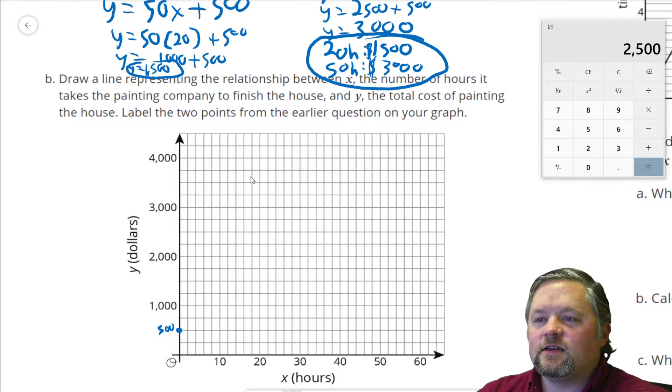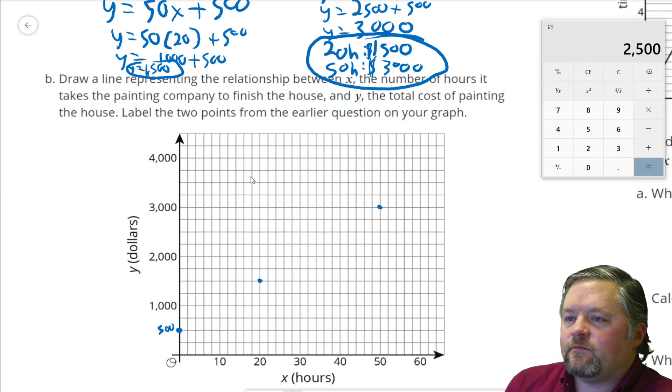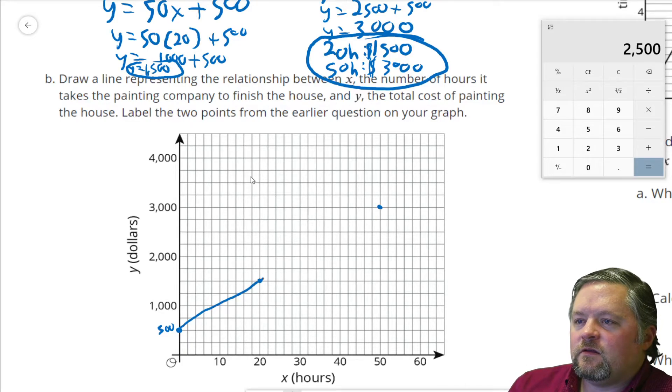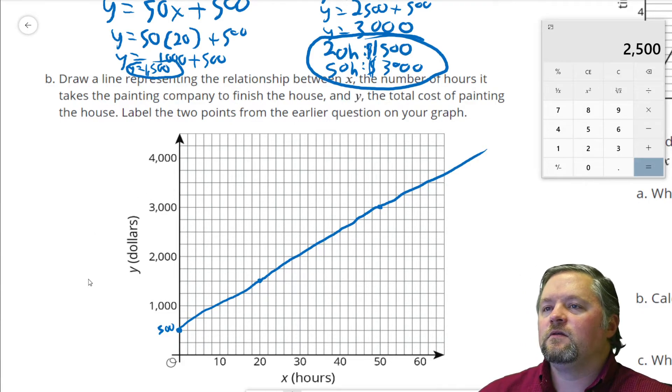That's our intercept, our starting value. We know a 20-hour house costs $1,500. And we know a 50-hour house costs $3,000. We know a 50-hour house costs $2,000. Okay.